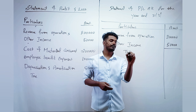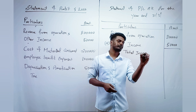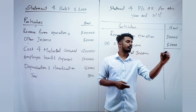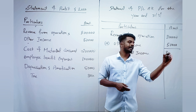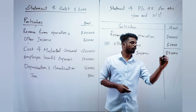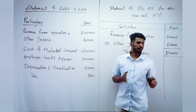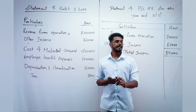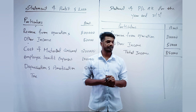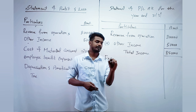Next, write Total Income, which comes to 8 lakh 50,000 rupees. After that, we move to the Expenses section.